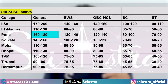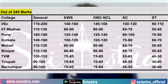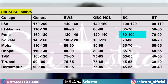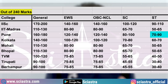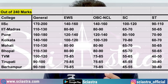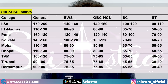For ISER Pune: General 160–180, EWS 120–140, OBC NCL 120–140, SC 80–100, ST 70–90. Similarly, data for all the ISERs — Kolkata, Mohali, Bhopal, TVM, and Tirupati — can be seen on screen.